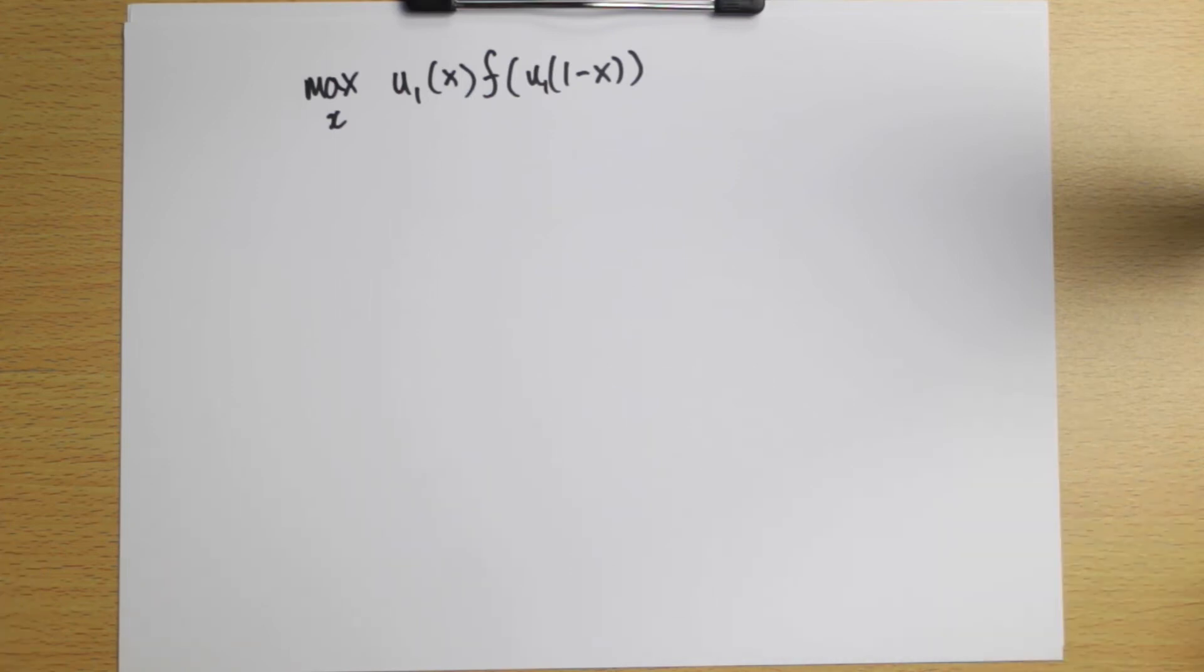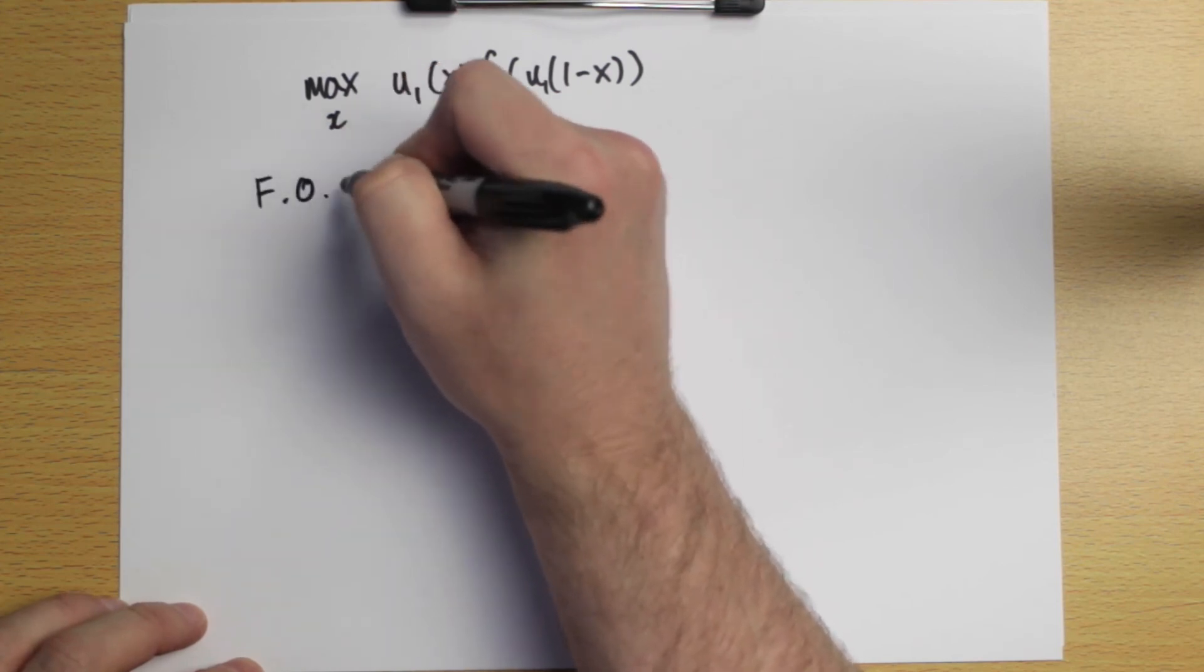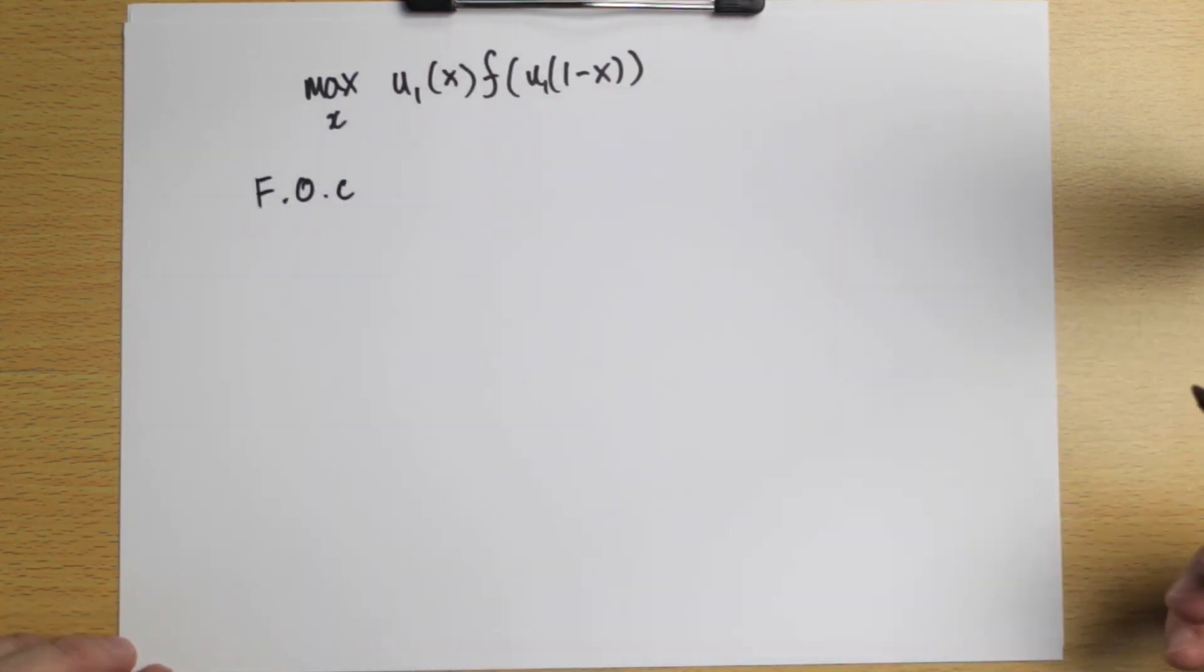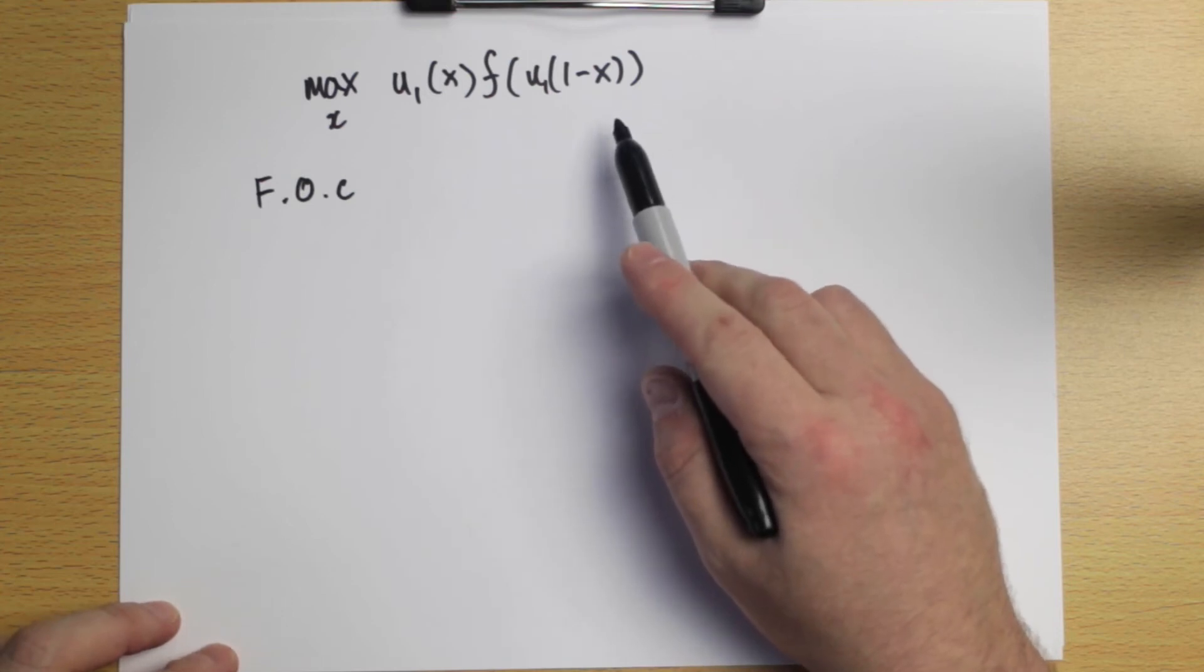But we will be able to say something about the outcome. So let's examine the first order condition, F.O.C. If I want to maximize an expression like this, I differentiate with respect to X, and then I find the X star that makes that derivative zero. That would be the first order condition. So let's differentiate this with respect to X.